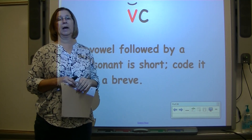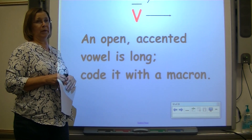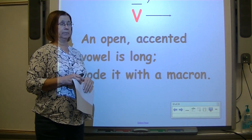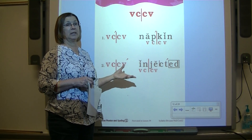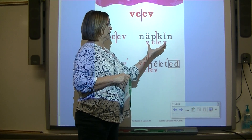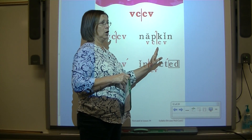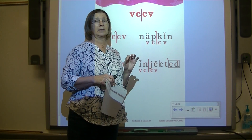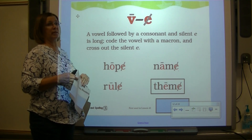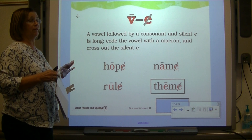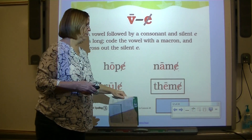Repeat after me: a vowel followed by a consonant is short — code it with a breve. An open accented vowel is long — code it with a macron. This is our rule card for the VCCV pattern. If you have two vowels spread out, look between them to see if you have two consonants. If you do, divide between the two consonants and code each syllable, because each syllable in a word has a vowel sound. Repeat after me: a vowel followed by a consonant and sneaky E is long — code the vowel with a macron and mark out the sneaky E.